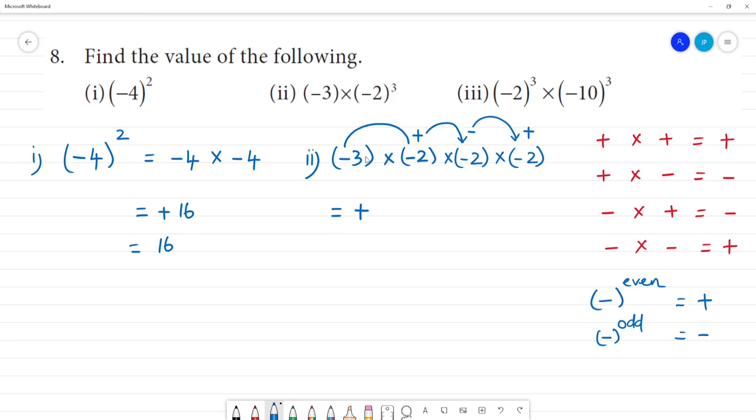Now multiply the numbers: 3 to 6, 6 to 12, 12 to 24. So what is the answer? Answer is 24, plus 24. Clear?